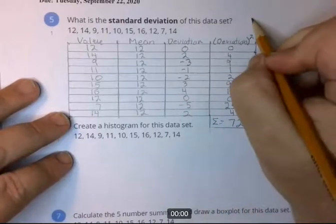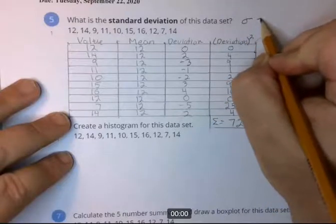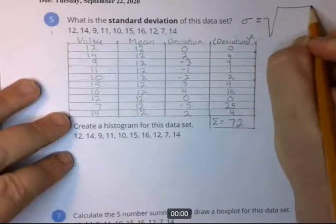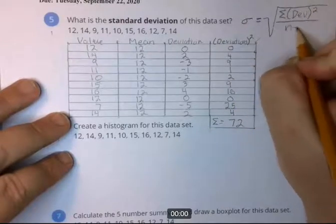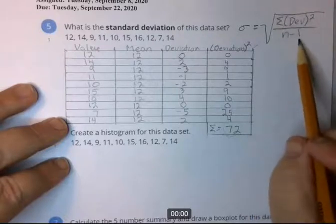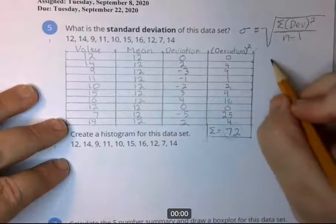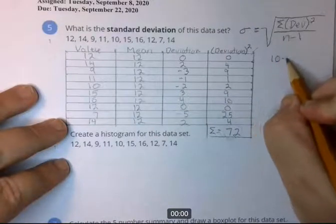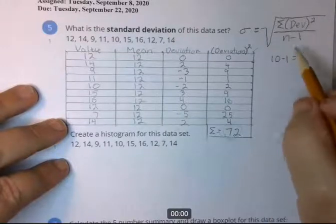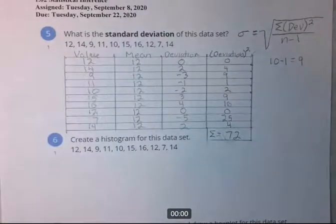So the formula for standard deviation, you've seen it before, it's sigma. Sometimes they do just use small s for that for a sample standard deviation, but we're going to go ahead and use sigma. It's the square root. So this up here is this number right here. This number is the number of values, which is 10 minus 1 equals 9. The theory of why it's minus 1, why do you subtract 1 from the number of values? It's something that you don't need to understand for this class.